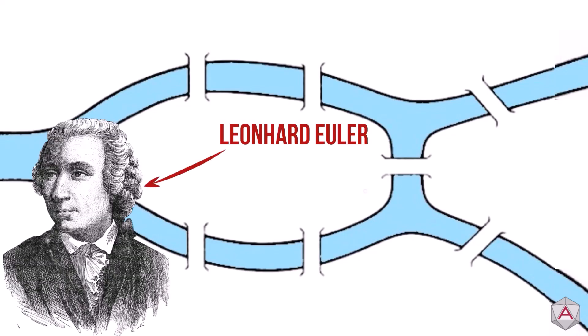Leonhard Euler, the founder of graph theory, once looked at the city of Königsberg and wondered if it was possible to cross every one of the bridges in the city just once.